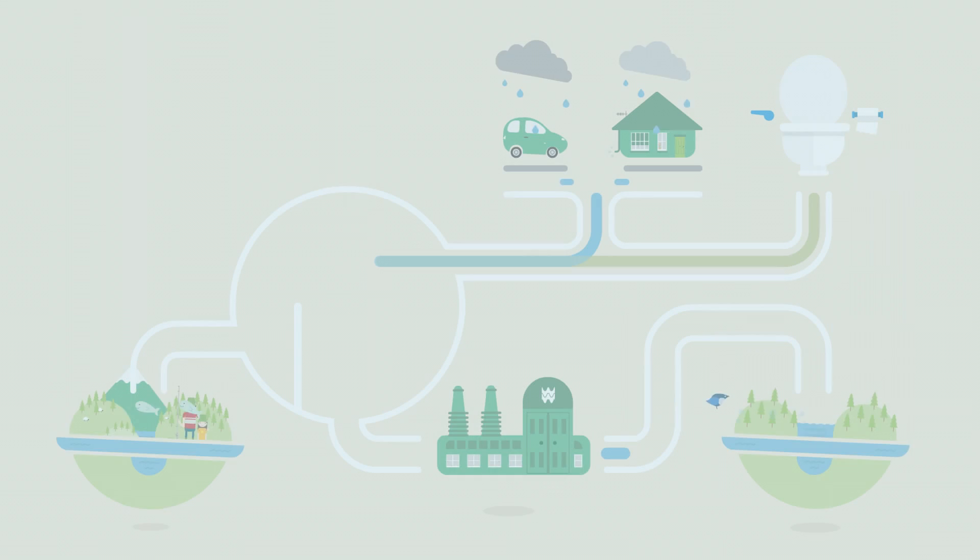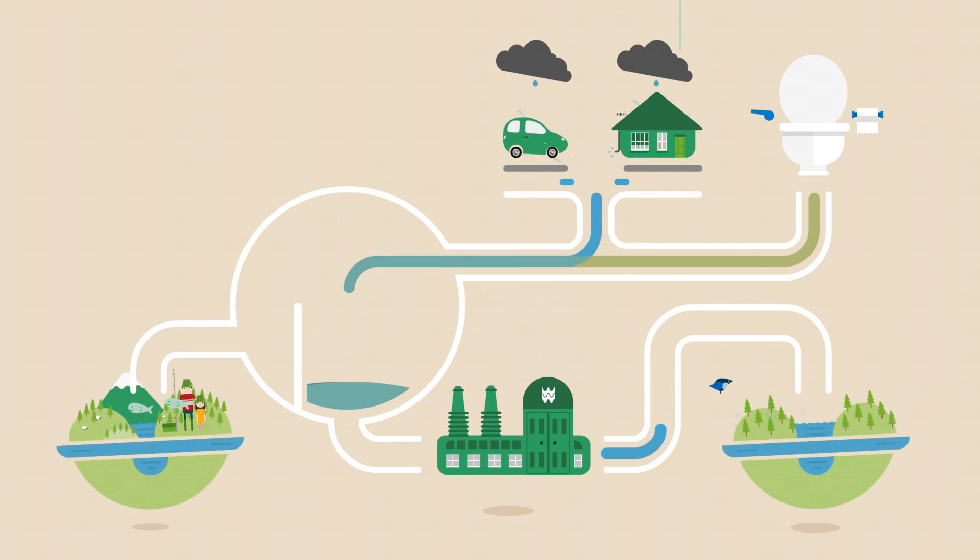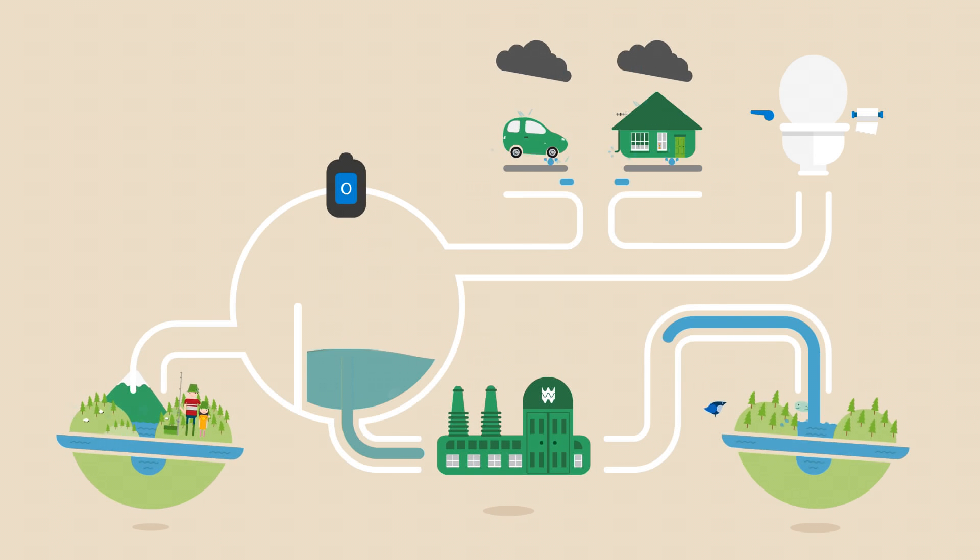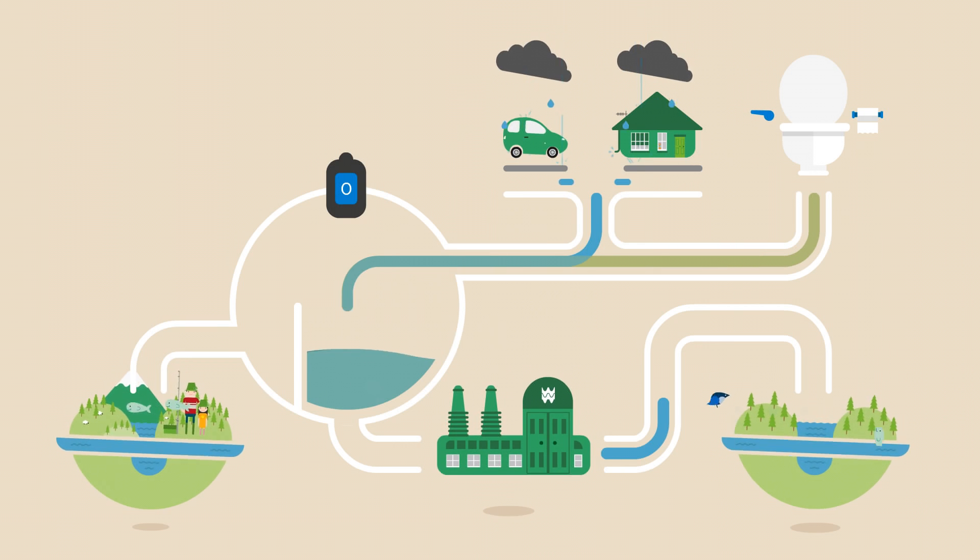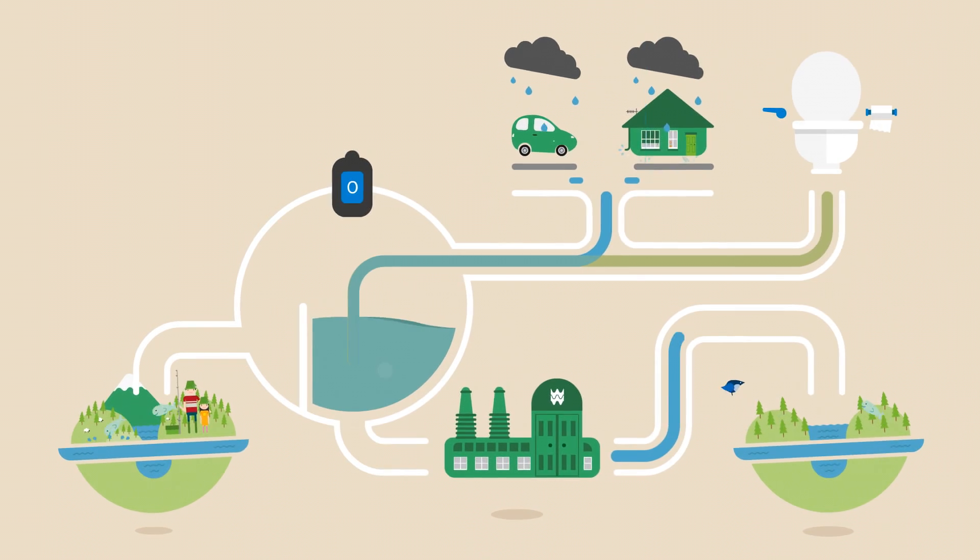To make doubly sure our overflows have as little impact as possible on the environment, we have put monitors on lots of our overflows. These tell us how often they reduce the risk of flooding to homes and streets by releasing excess water and for how long.